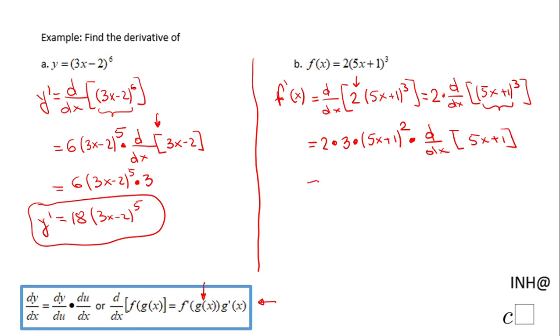So let's do one more step for the last part. The derivative—and in fact we can simplify right ahead: 2 times 3 is 6, so 6 times the quantity (5x + 1) to the second power, times the derivative of 5x + 1, which is just 5.